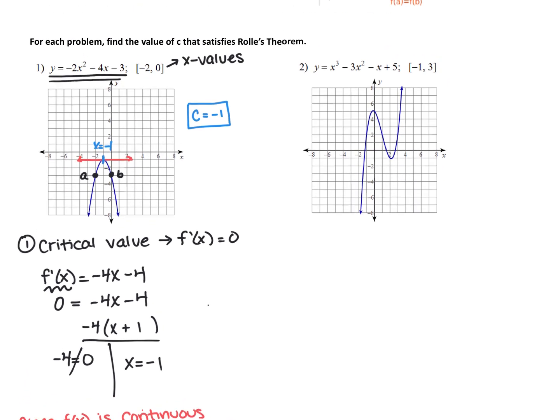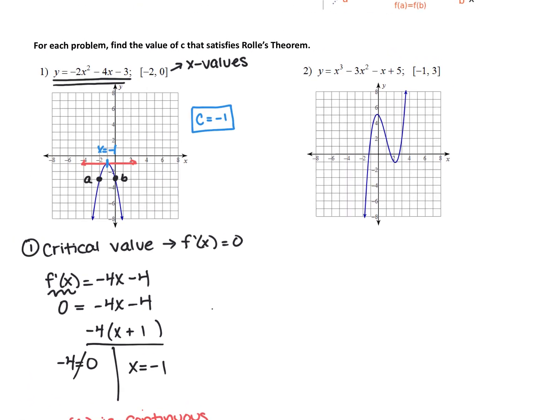All right, so let's take a look at example number two. Example number two is actually not going to work algebraically, so we're just going to do it graphically. So find the value of c that satisfies Rolle's theorem. Here's my interval from negative one to three. When x is negative one, it looks like the y is two. When x is three, it also looks like the y is two. So that's perfect. We have our two stationary points that have the same y value, and we're looking for horizontal tangents.